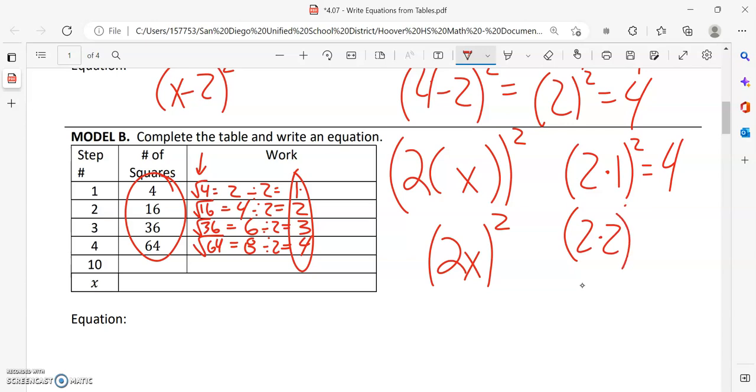So two times step two, two times two is four, four squared is 16. Then two times step three squared, two times three is six, six squared is 36. So far, our numbers are matching up.